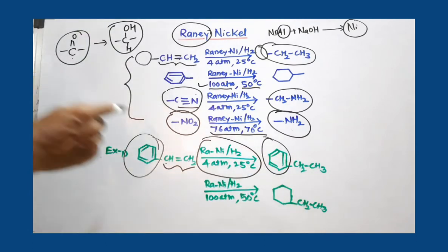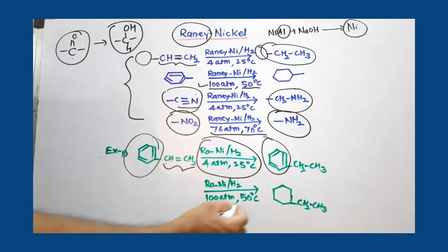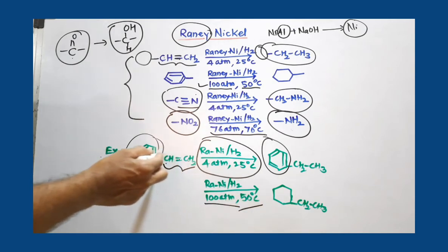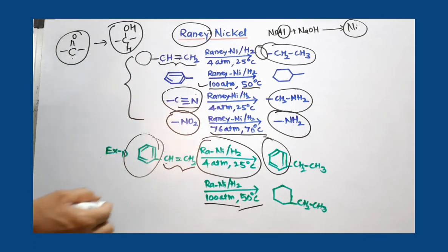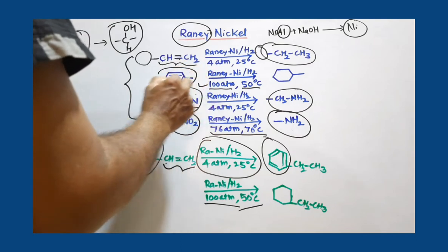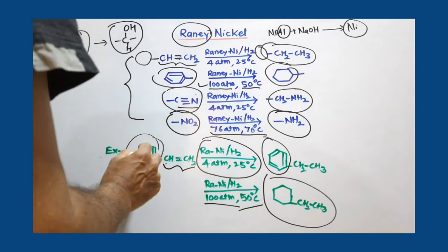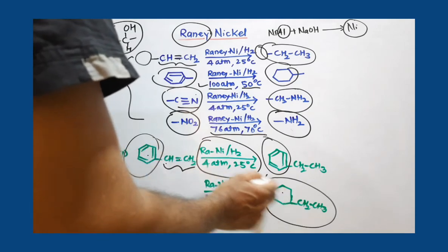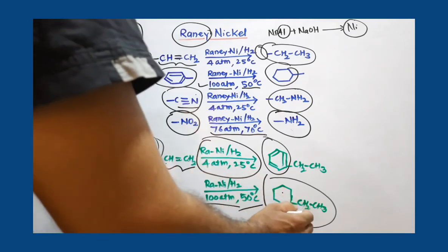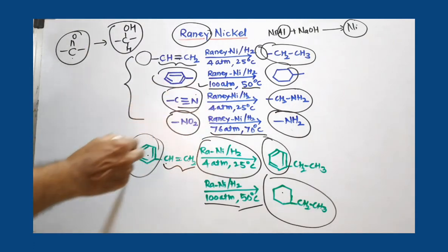But if the same compound, if you use different conditions - 100 atmospheric pressure and 50 degree Celsius temperature - both these double bonds and aromatic ring is also reduced. The benzene ring is converted to cyclohexane and CH=CH2 is converted to CH2-CH3. If any other group is there, you have to reduce it.